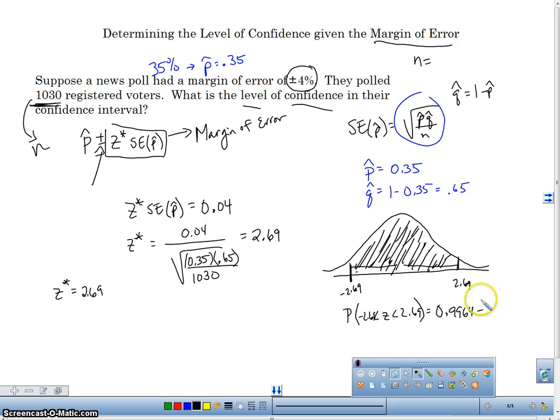So the probability that we're between these is 0.9964 minus, what was that other one there? Negative 2.69 0.0036. We're going to figure that out. And that's going to give me 0.9928. So this is my level of confidence. So my level of confidence is 99.28%.